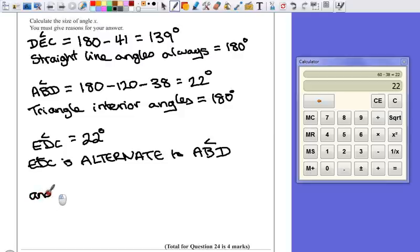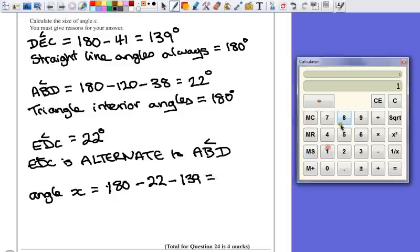So angle X, which is a little unfair for them to suddenly start changing the way they've named the lettering for the angles. But hey, angle X equals 180 take away the 22 degrees that we just found and the 139 that we found earlier on. So we've got 180 take away 139, take away 22, gives us an angle of 19 degrees.